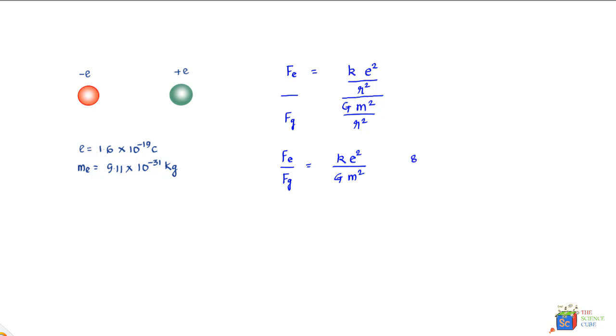We'll square the charge and divide this by G, which is 6.67 × 10⁻¹¹ N·m²/kg², times the square of the mass, which is (9.11 × 10⁻³¹ kg)².